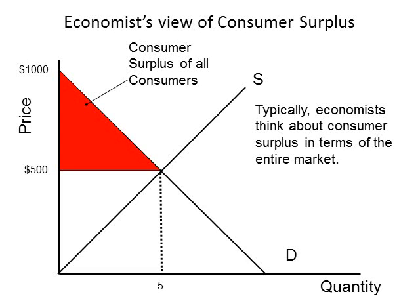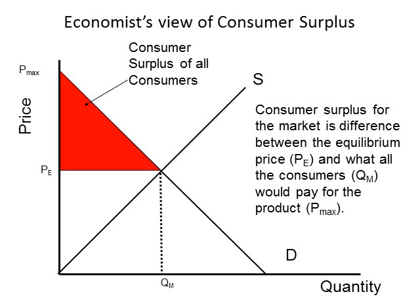Typically economists think about consumer surplus in terms of the entire market for the good. This means they are less interested in the amount Joe or Sally receives individually, but what consumers receive in general. The consumer surplus for the entire market is the area underneath the demand curve above the equilibrium price. In the example, the consumer surplus is the region bounded by the $1,000 mark, the $500 market price, and the quantity of TVs sold. More generally, the consumer surplus is the region bounded by the maximum price, the equilibrium price, and the equilibrium quantity. How might we calculate the dollar value of the consumer surplus?